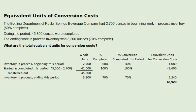We add the equivalent units for conversion costs for the different groups of inventory together: the inventory in process beginning this period, 1,080; plus the started and completed this period, 42,600; and finally, the inventory in process at the end of the period, 2,240. We arrive at our solution: 45,920 — that is the total equivalent units for conversion costs.